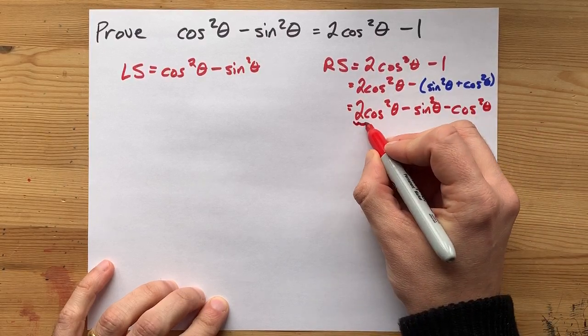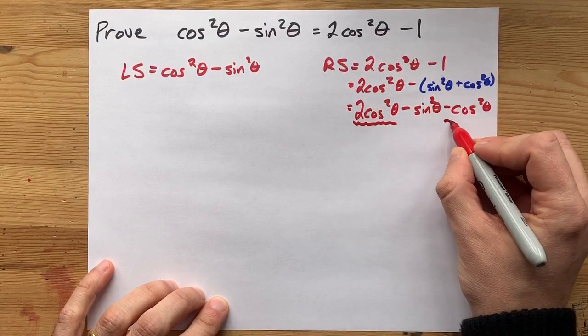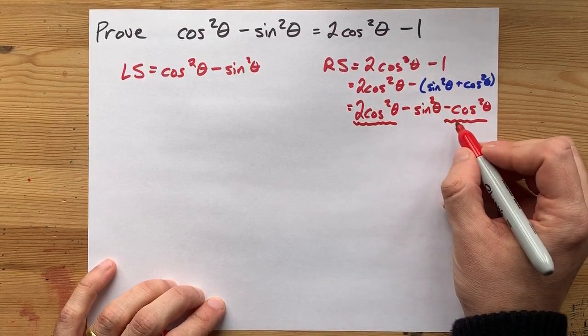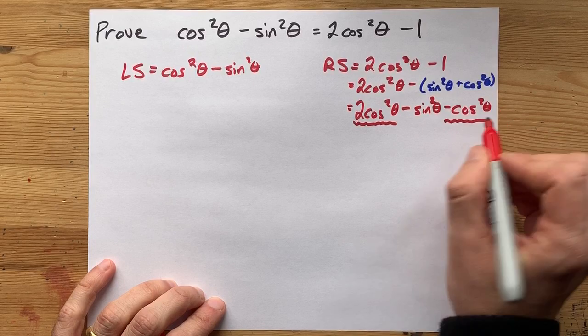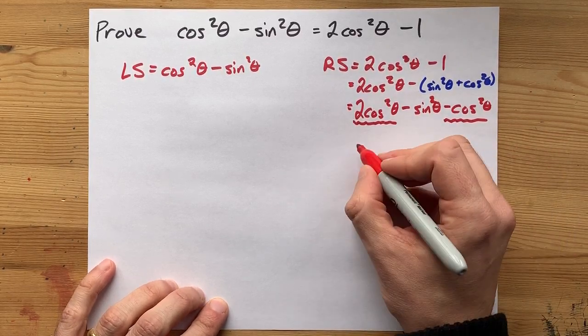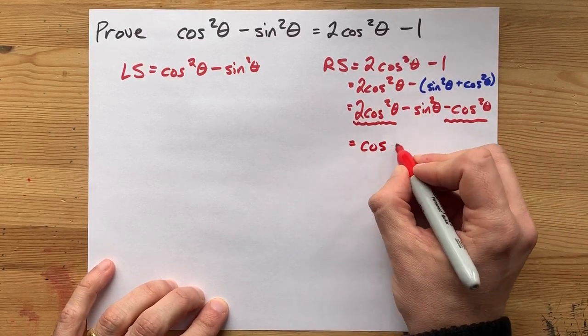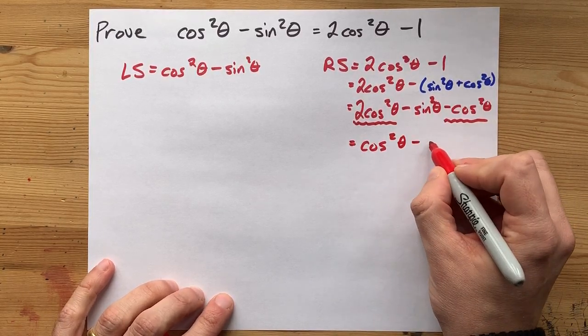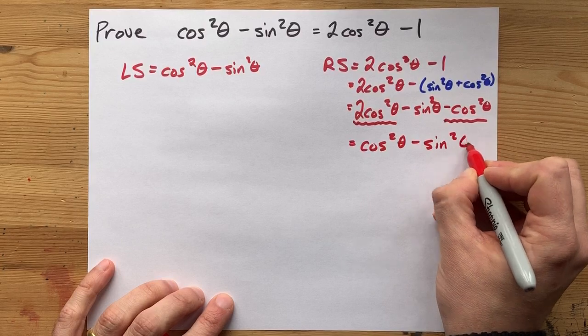These are like terms that I can collect. I have two cos squared thetas, and I'm subtracting one cos squared theta. Two of something, take away one, leaves you with a single one. That is cos squared theta. I still have my minus sine squared theta.